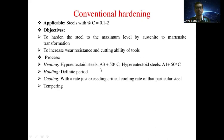The second process in conventional hardening is the holding process. For a definite period of time, the steel is kept at that constant temperature — either A3 plus 50 degrees Celsius or A1 plus 50 degrees Celsius — for a particular period of time.